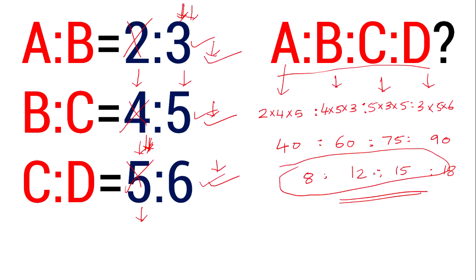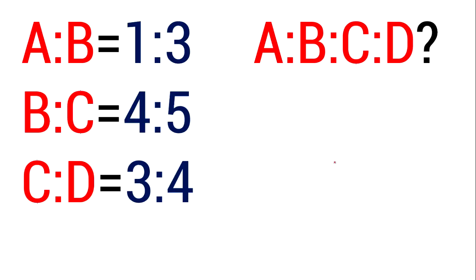Now let's look at this. A is to B is 1 is to 3, B is to C is 4 is to 5, C is to D is 3 is to 4. So we need to find A is to B is to C is to D.